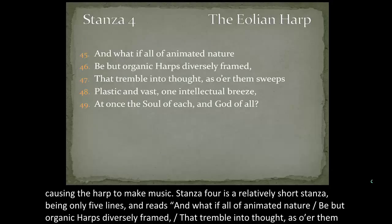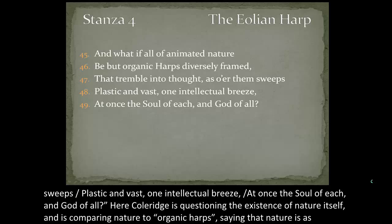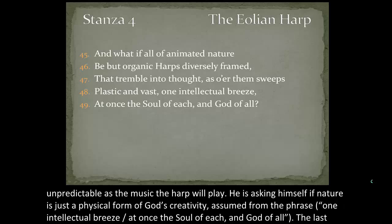Stanza four is a relatively short five-line stanza and reads: 'And what if all of animated nature be but organic harps diversely framed, that tremble into thought as o'er them sweeps plastic and vast one intellectual breeze, at once the soul of each and God of all.' Here Coleridge is questioning the existence of nature itself, comparing nature to organic harps and asking himself if nature is just a physical form of God's creativity.